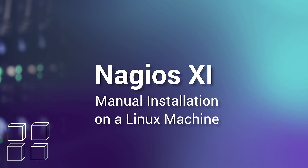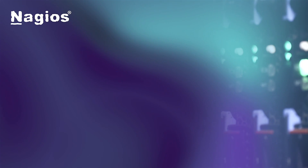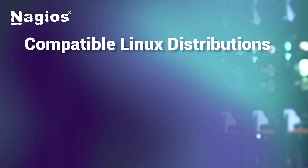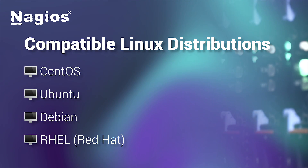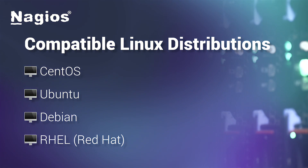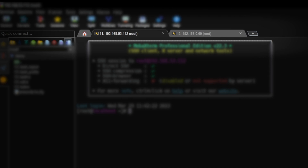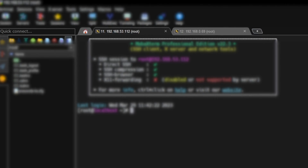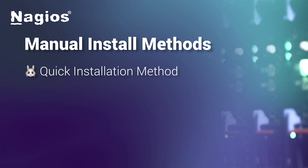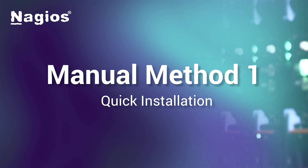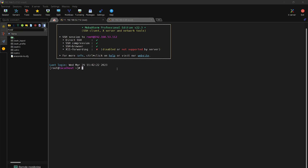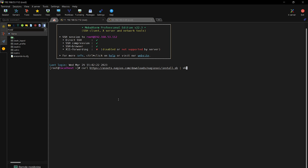The final thing we're going to look at today is manually installing XI onto a Linux machine. XI can be manually installed onto CentOS, Ubuntu, Debian, and RHEL or Red Hat distributions. I have two CentOS 8 VMs ready to go — two because there are two installation methods for manual installs: a quick installation method and a more manual installation method. I'll first walk through the quick installation method. In the command line, enter this command, which will download and install the latest version of XI.